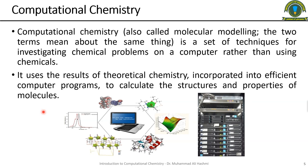Theoretical chemistry is incorporated into computer programs and we use those programs to calculate different properties of molecules — for example, NMR chemical shifts. Whatever NMR chemical shifts you get in experimental NMR, you can also calculate them from computational chemistry, because the fundamental laws are the same.